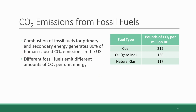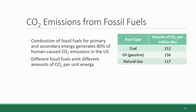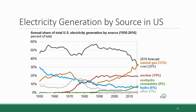Combustion of enough coal to generate a million BTUs produces 212 pounds of CO2. Combustion of enough gasoline to produce the same energy produces less CO2 — only 156 pounds — and natural gas is even lower at 117 pounds per million BTUs. In recent decades the US has been transitioning its energy infrastructure away from coal and toward greater reliance on natural gas, which is seen as beneficial because of its lower emissions per unit of energy.